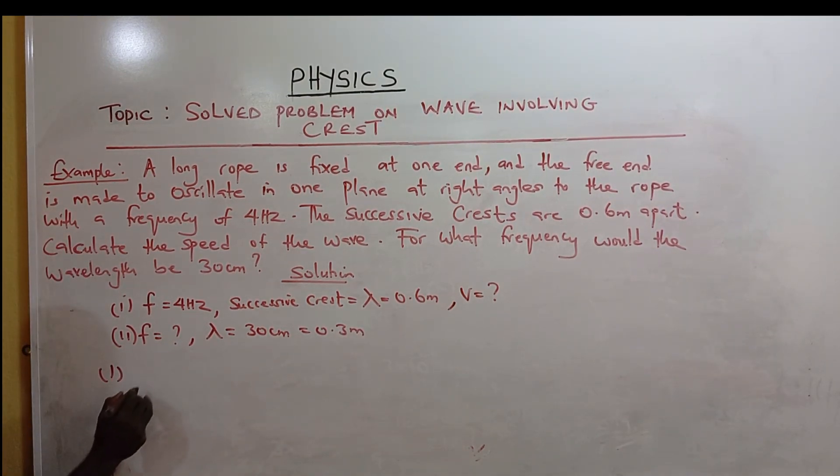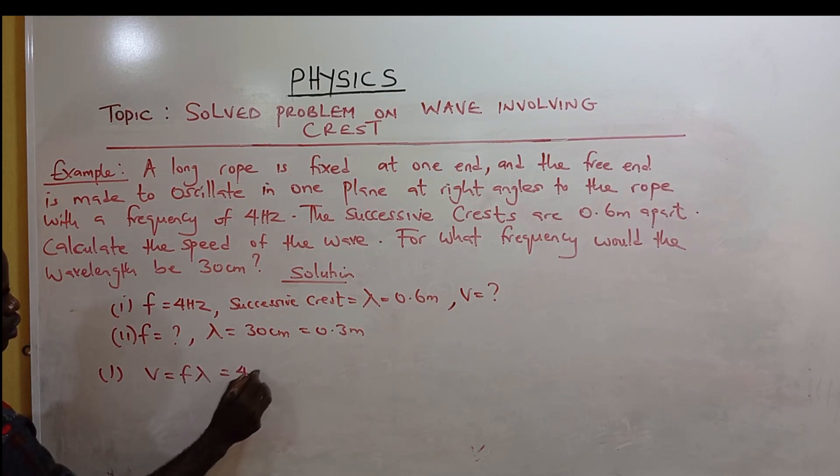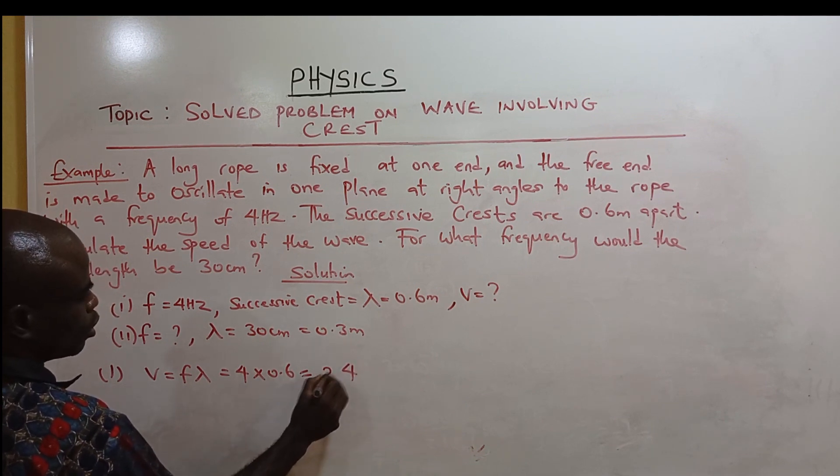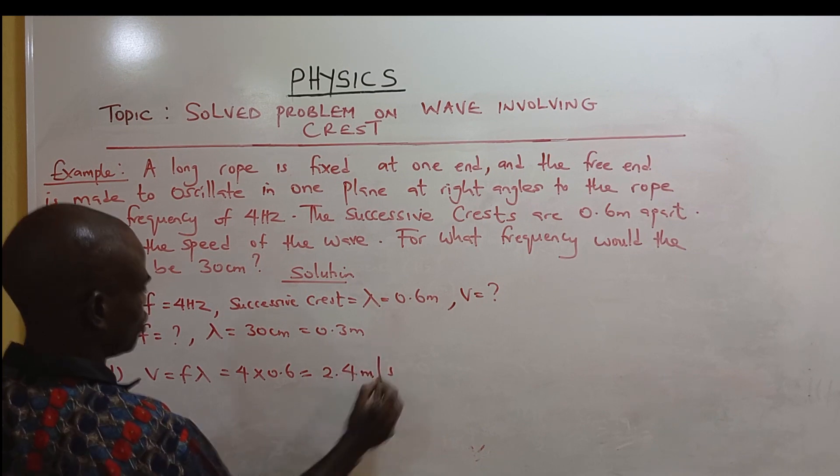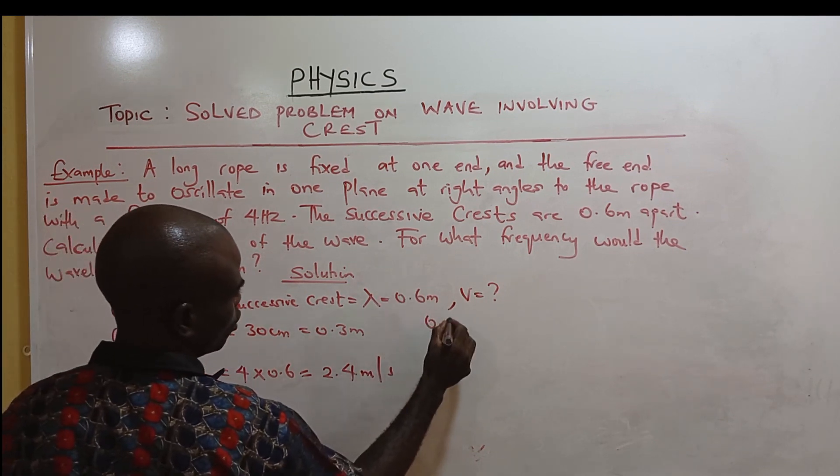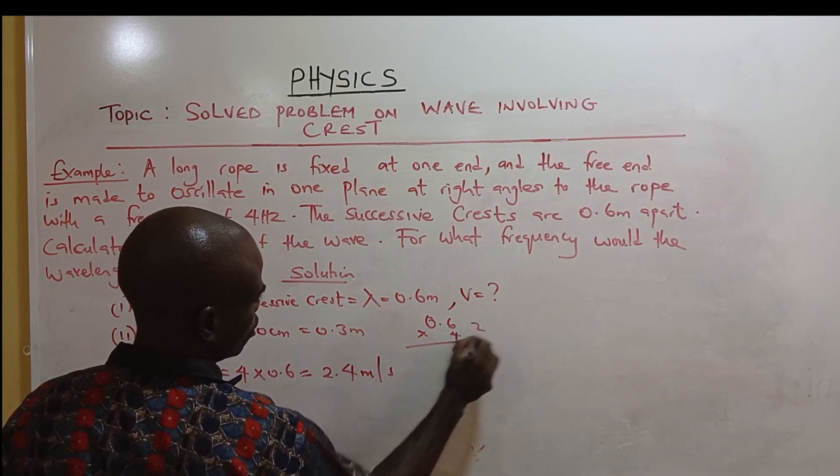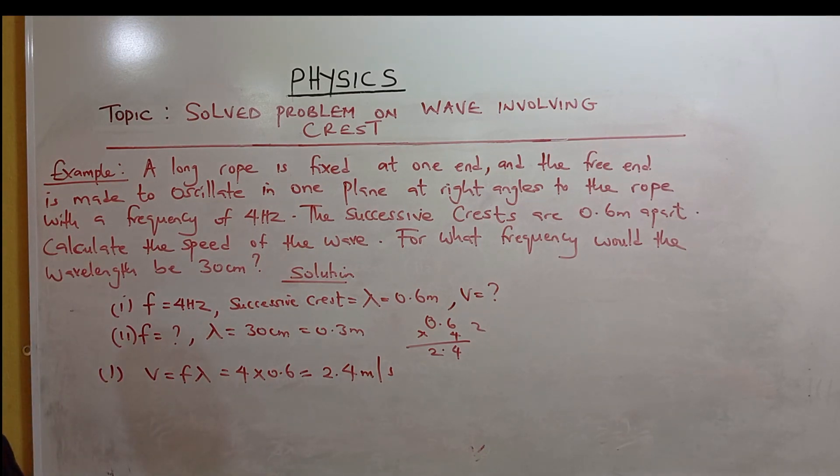The first one, V equals lambda, which is 4 times 0.6 plus 2.4 meters per second. So it is 0.6 times 4 plus 2.4 meters per second. Second part.